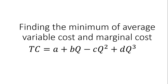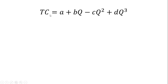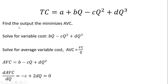In this short video, we're going to be finding the minimum of average variable cost and the minimum of marginal cost from this cubic total cost function. We want to find the output that minimizes AVC, average variable cost.